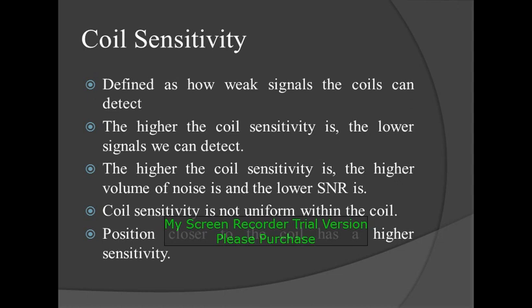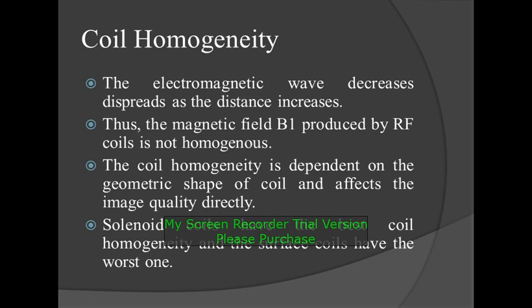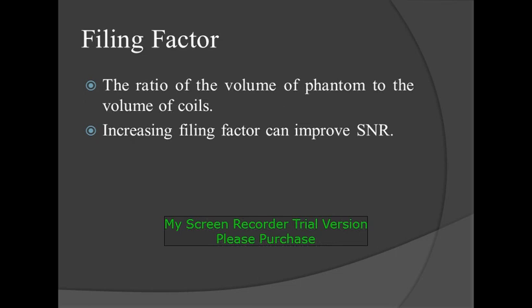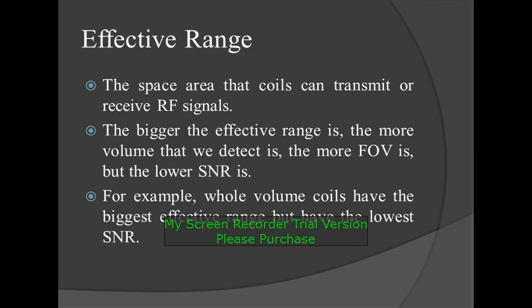Coil homogeneity: electromagnetic waves decrease and spread as the distance increases. Thus, the magnetic field B1 produced by an RF coil is not homogeneous. Coil homogeneity is dependent on the geometric shape of the coil and affects image quality directly. Solenoid coils have the best coil homogeneity and surface coils have the worst. Filling factor: the ratio of the volume of phantom to the volume of the coil. Increasing the filling factor can improve SNR. Effective range: the space area that coils can transmit or receive RF signals. The bigger the effective range, the more volume detected and the larger the FOV, but the lower the SNR. Whole volume coils have the biggest effective range but the lowest SNR.